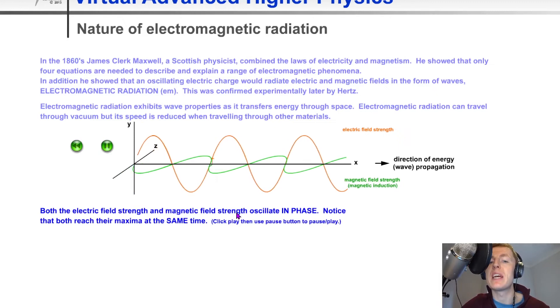You'll see that both the electric field and magnetic field strength oscillate in phase. Both reach their maxima at the same time, and both also reach their minima at the same time - the bits where there's zero oscillation or amplitude.